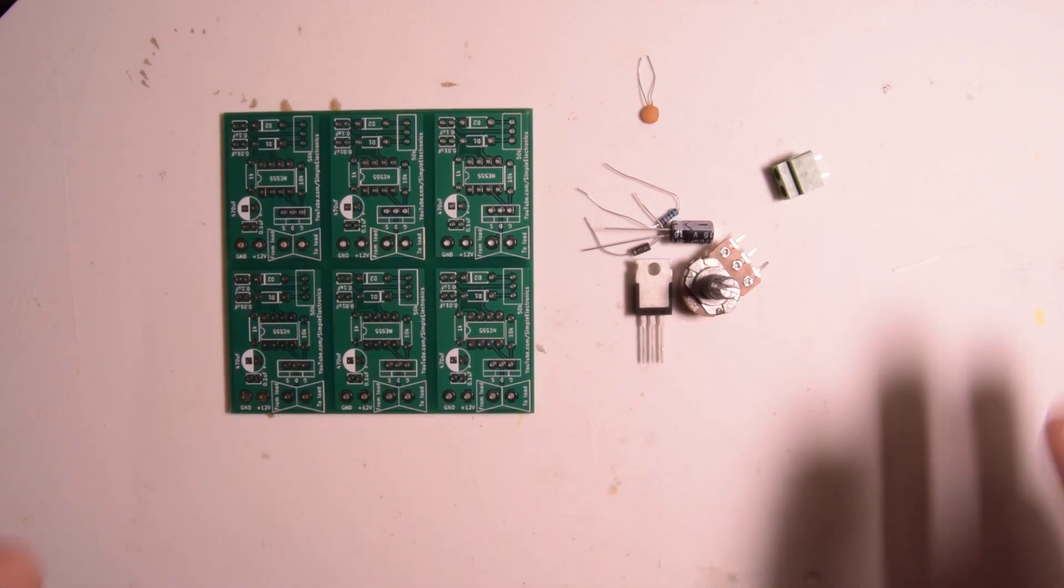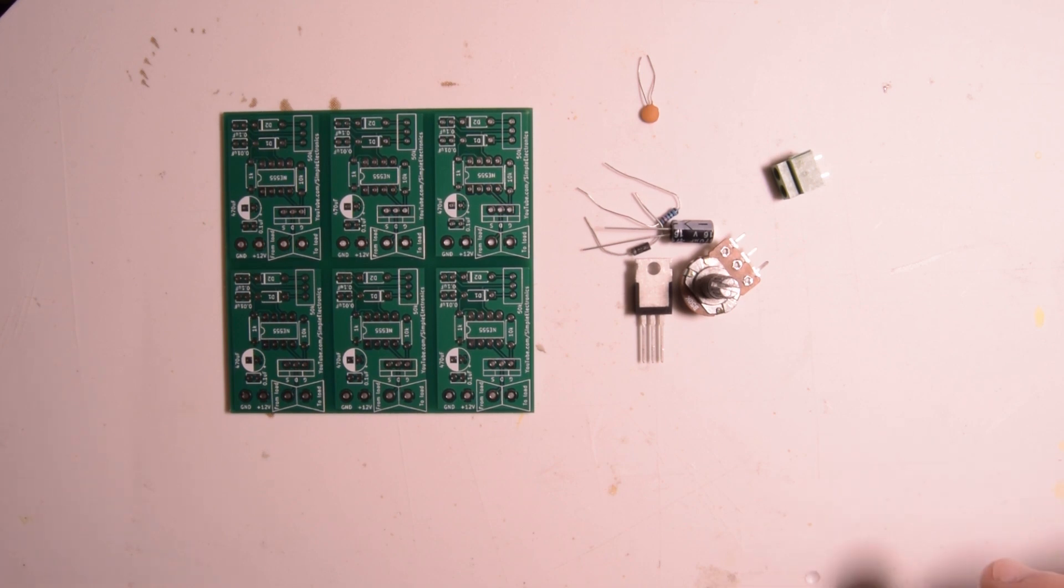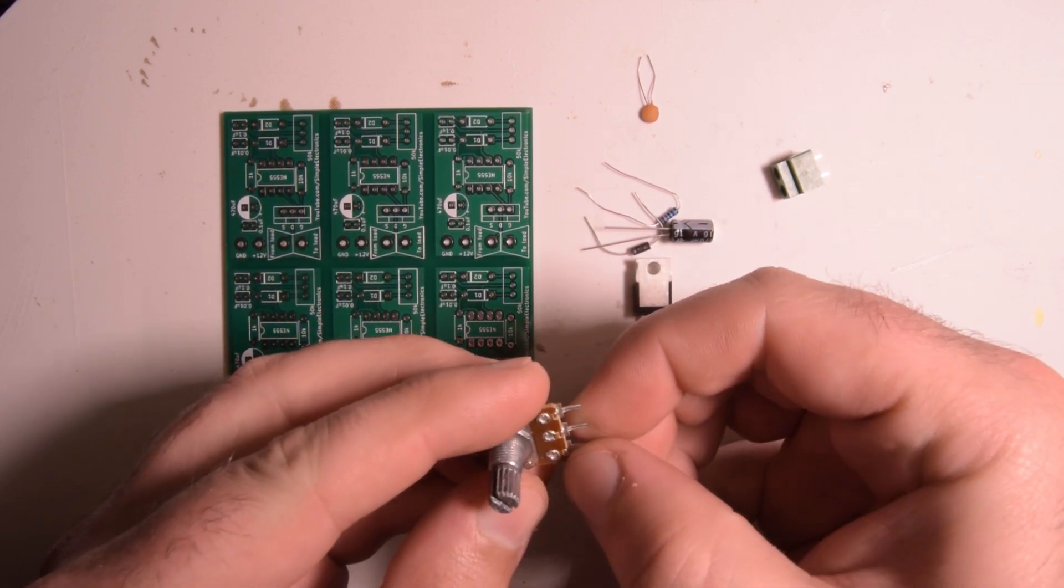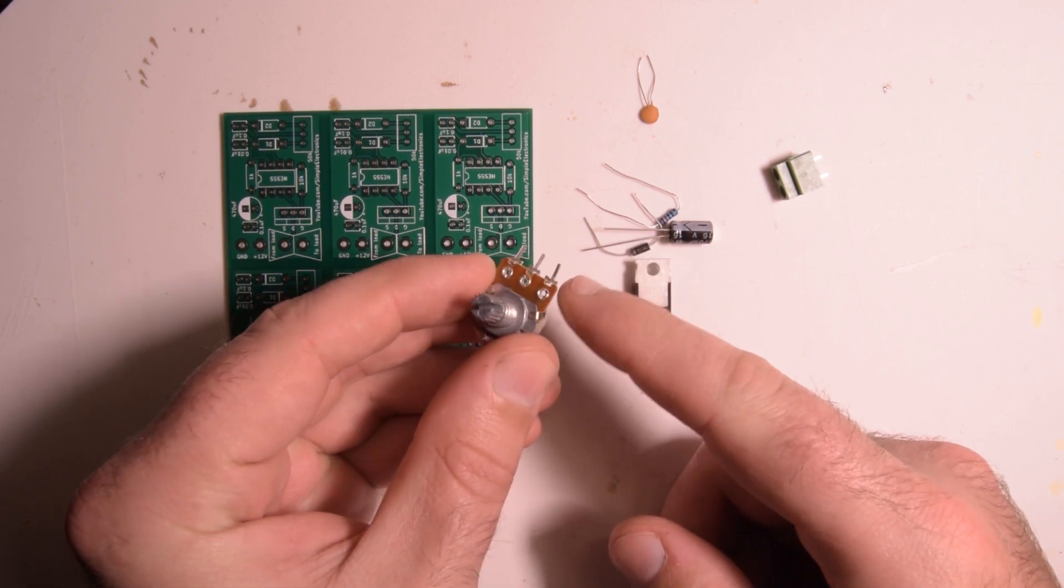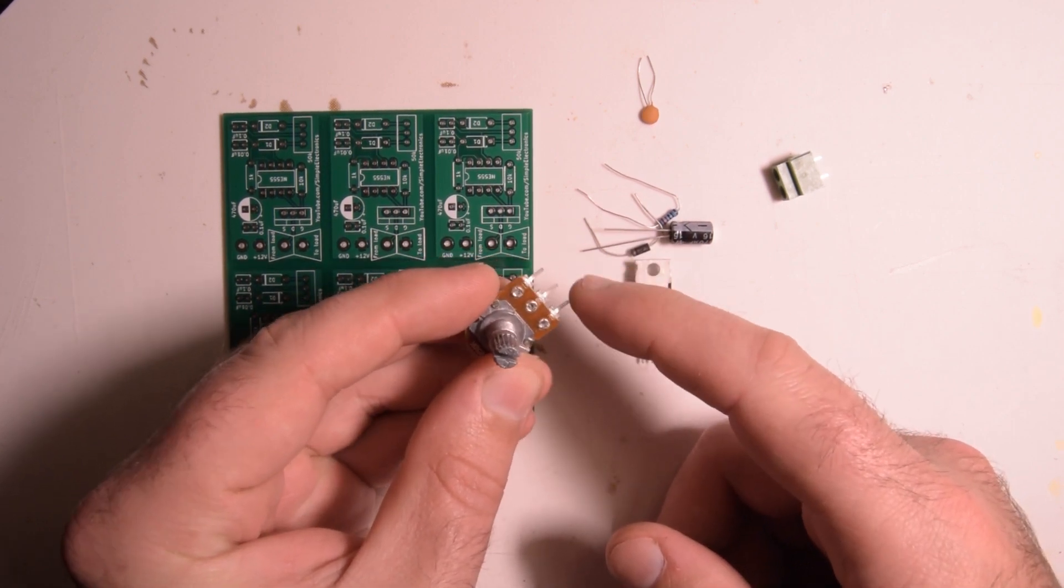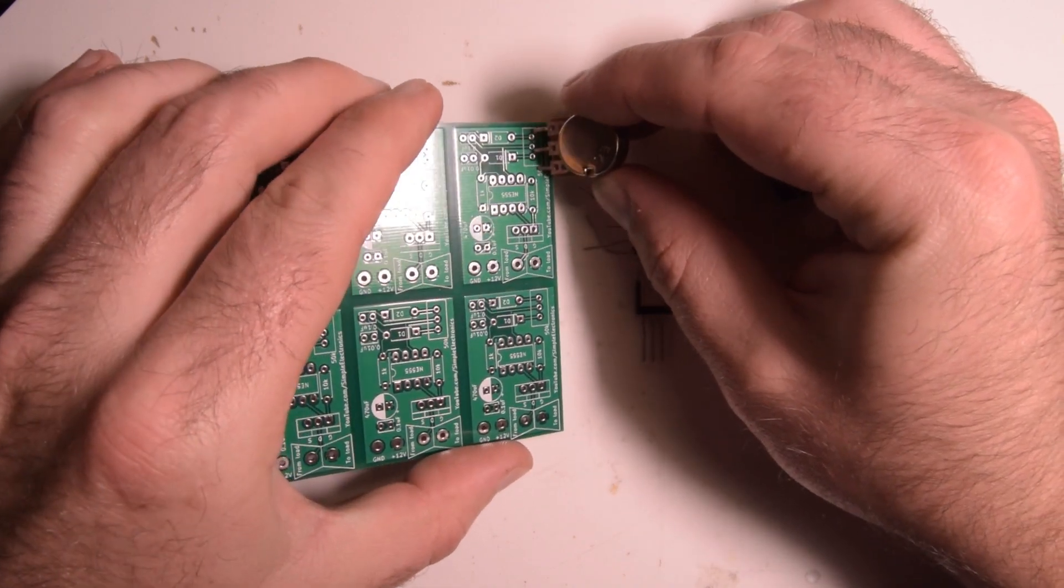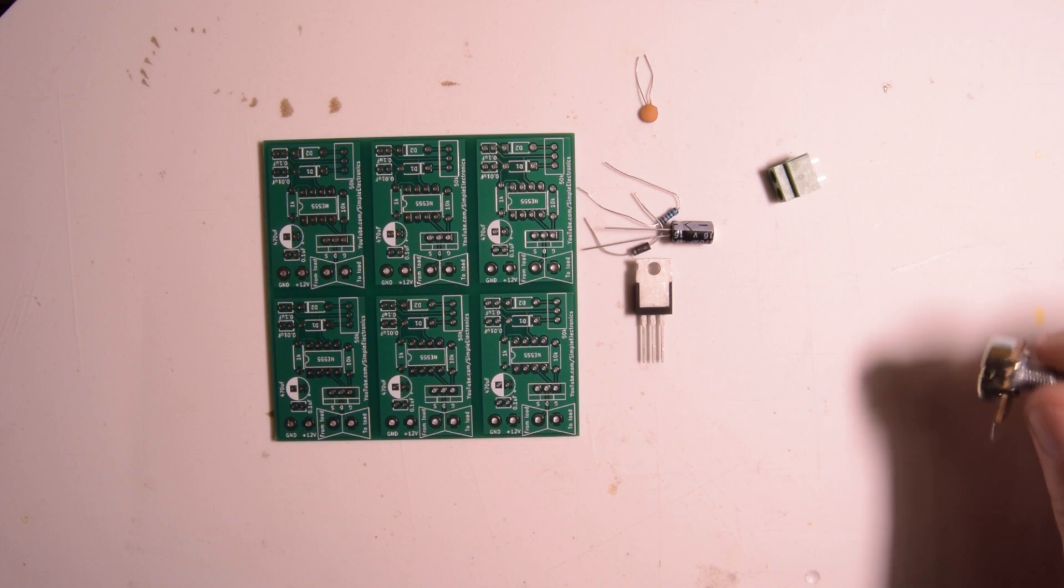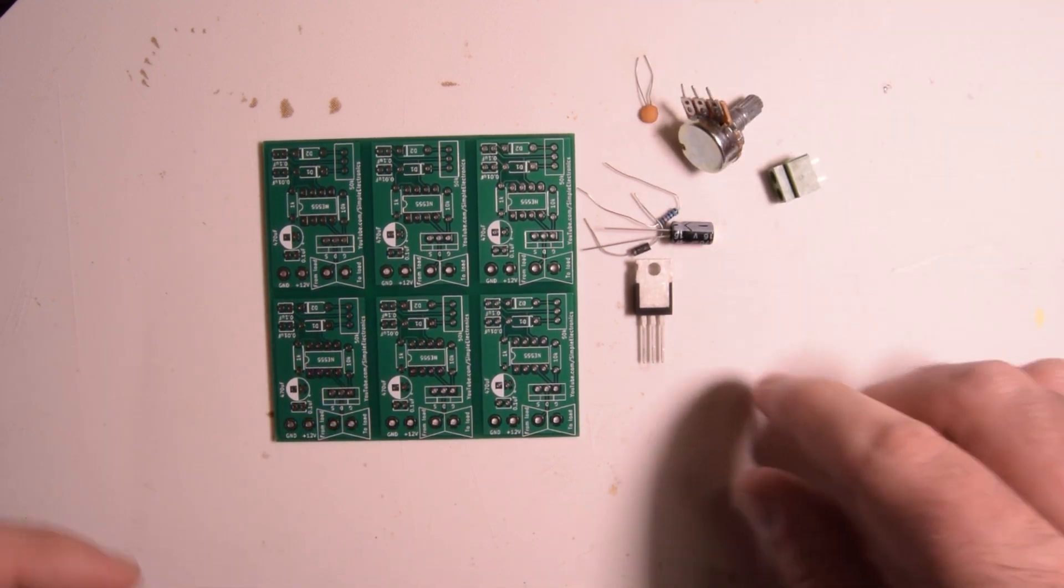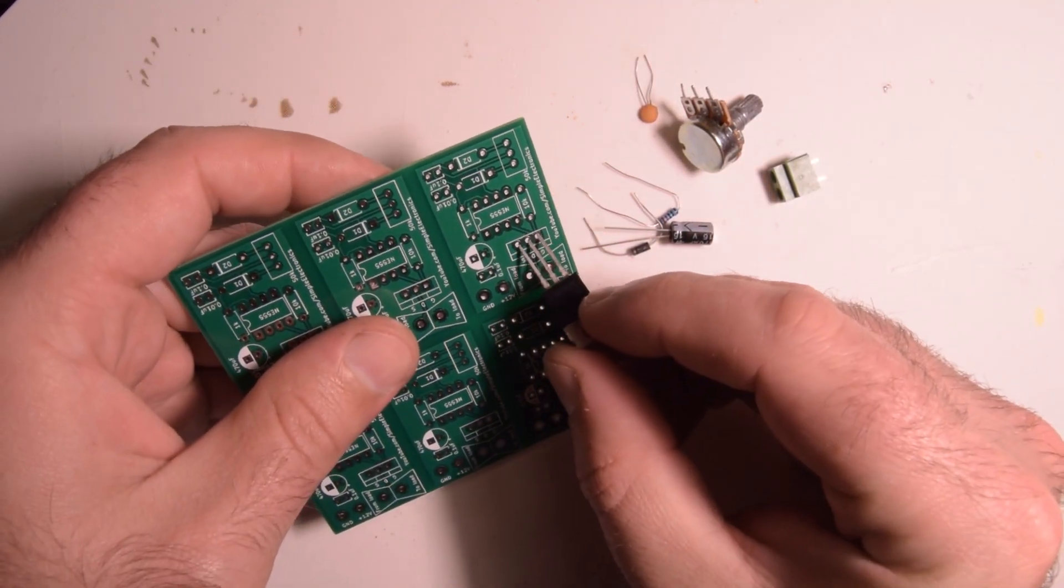So I just have a small smattering of the components that I picked. And already I see a mistake in these boards. I thought my potentiometers would have 0.1 inch pin spacing, but they don't. They have 0.2 inch pin spacing. So already that's not going to fit. And mind you, that's not JLC's fault. That's this guy's fault. I'm the one who designed it.